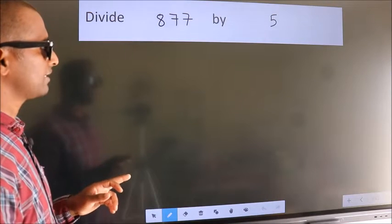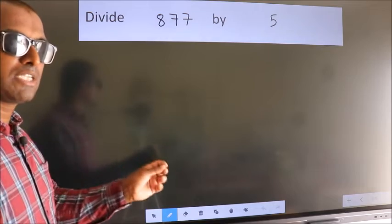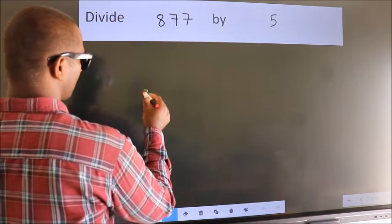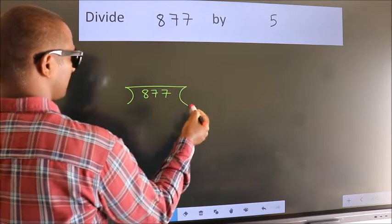To divide 877 by 5, we should frame it in this way: 877 here, 5 here.